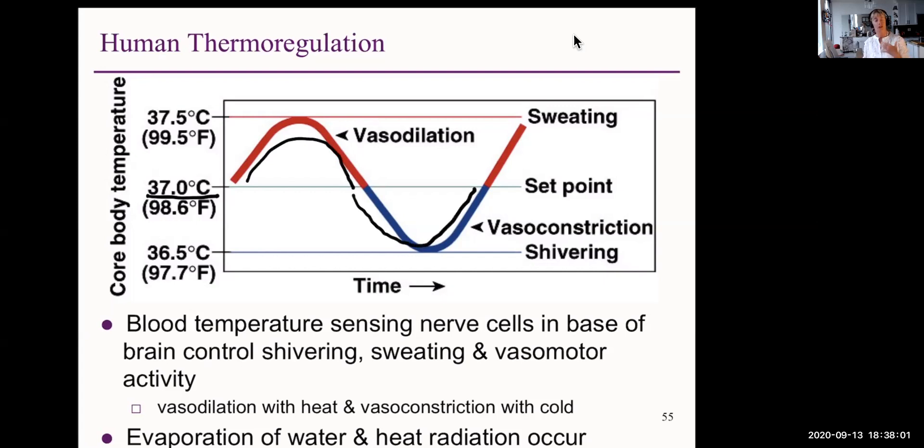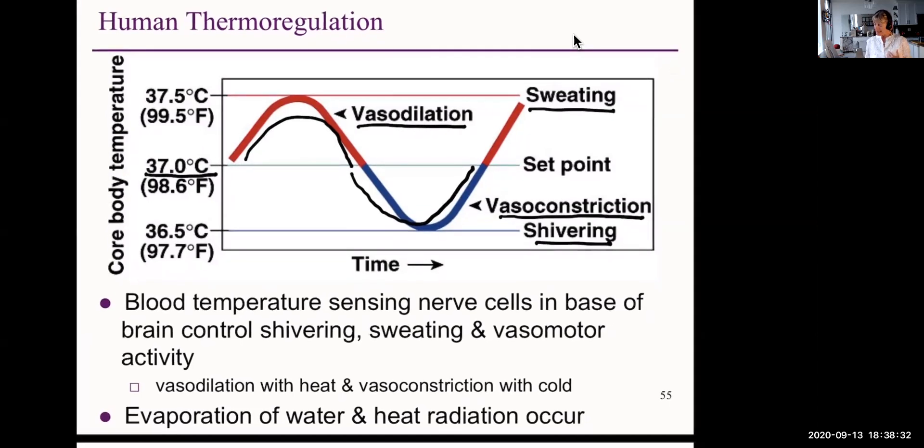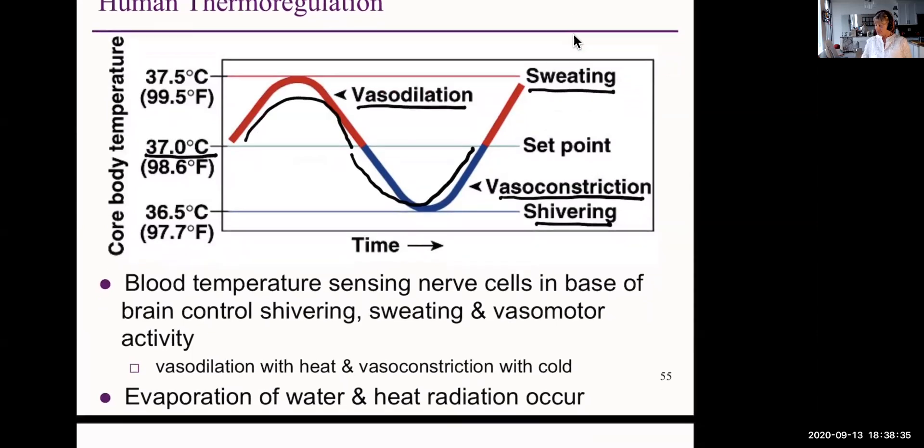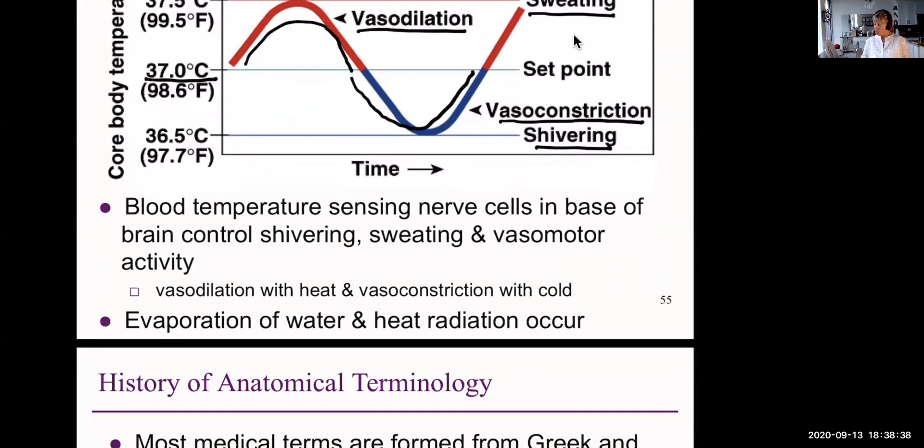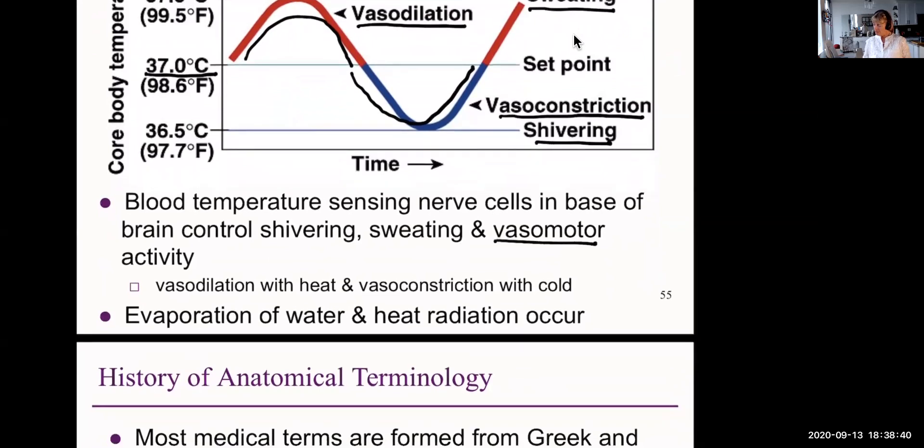So for example, if you're too hot, your vessels dilate to release more heat. If you're too cold, your blood vessels will constrict to prevent heat loss. If you get cold, you shiver. Shivering causes muscle contractions, which release heat because they are a chemical reaction. If you're too hot, you sweat, and that causes evaporative cooling. And your temperature is sensed by nerve cells, and the reaction is to shiver or sweat or to change your vasomotor activity.